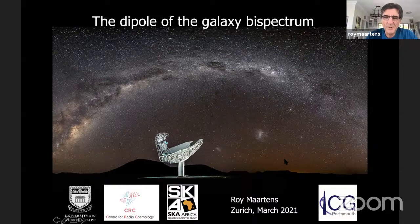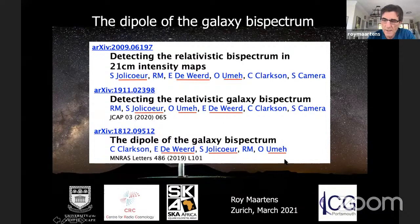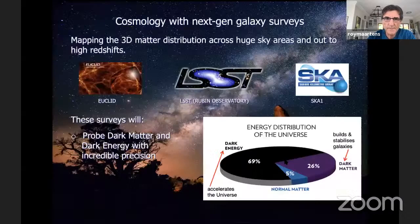Thanks very much for the kind invitation. Today I want to talk about a topic I've been working on with a number of postdocs and students: two postdocs, Sian Jolicoeur and Anobino Oumey, PhD student Alina DeViert, as well as colleagues Chris Clarkson and Stefano Kamra. This is about the dipole of the galaxy bispectrum. I'll build up to it and then tell you what we have done and plan to do with this property.